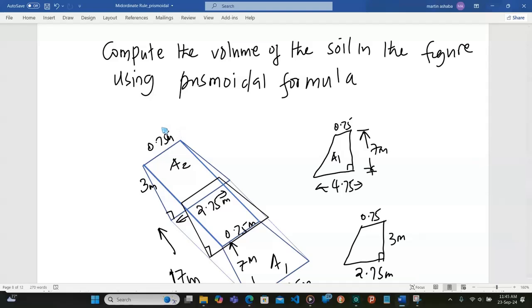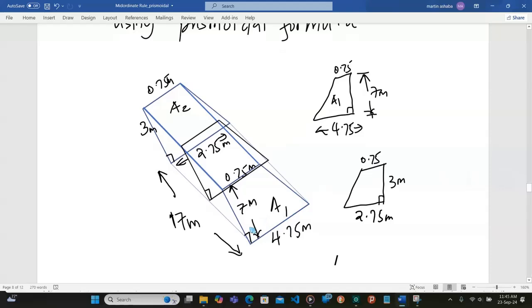To begin with, let's first look at our trough. The cross-section is trapezoidal, so here the base is 4.75 meters, the height is 7 meters. On the other side, the height is 3 meters.